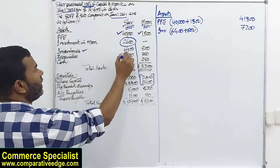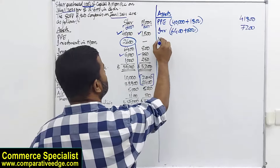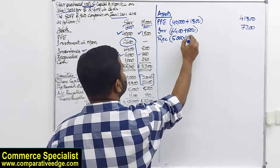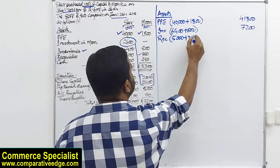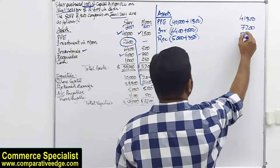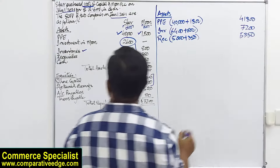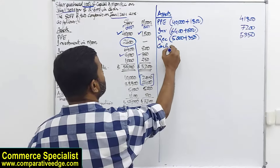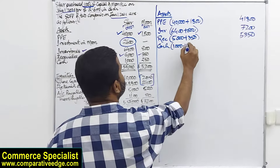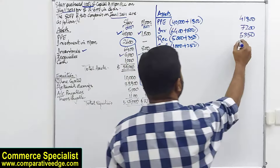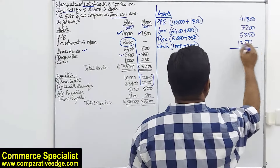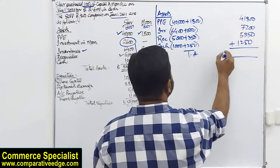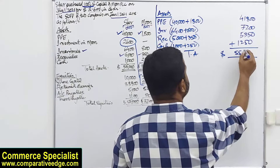We have receivables — 5,000 and 350 — so receivables for parent and subsidiary would be added simply. We also have cash: 1,000 plus 250 equals 1,250. Add all of them and you get total assets of 55,600.